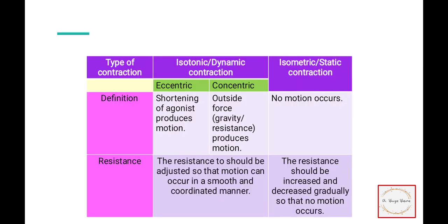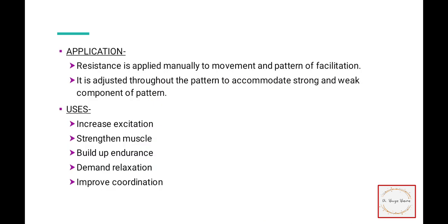Isotonic muscle contraction is broadly differentiated from isometric. In isotonic, the length of the muscle changes. In isometric, no motion occurs and the length of the muscle remains the same. Resistance in isotonic contractions should be adjusted so that the motion can be done in a smooth and coordinated manner. In isometric contractions, you give enough resistance so that no motion occurs.